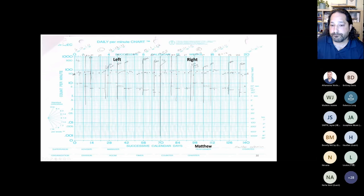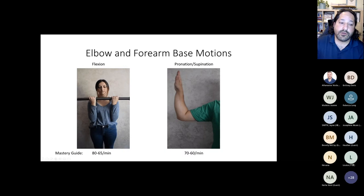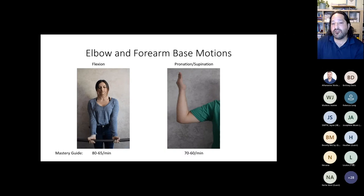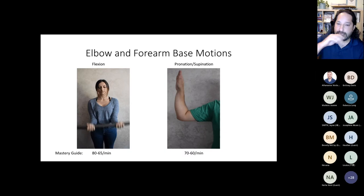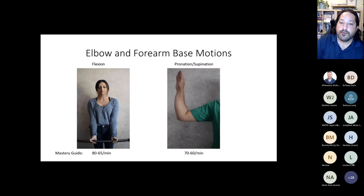Moving to elbow and forearm: the elbow can only move in one way — flexion — it's your basic bicep curl, with a mastery guide of 80 to 65. The next motion is really important: pronation and supination. The elbow is bent and you're twisting your arm up and down — most often used in pouring. You can see how important that is for pouring. There's something called an eccentric contraction where you're slowing your muscle down while stretching it — that's why little kids spill things and color outside the lines.